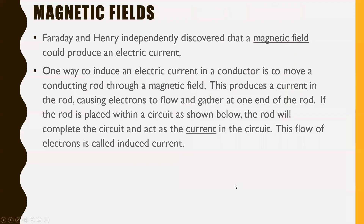Now here's what's actually in our notes for today: magnetic fields, Faraday and Henry. These two scientists independently discovered that a magnetic field could produce an electric current. If you have a magnetic field, it can produce an electric current; if you have an electric current, it can produce a magnetic field. Basically, electricity and magnetism are two sides of the same coin.